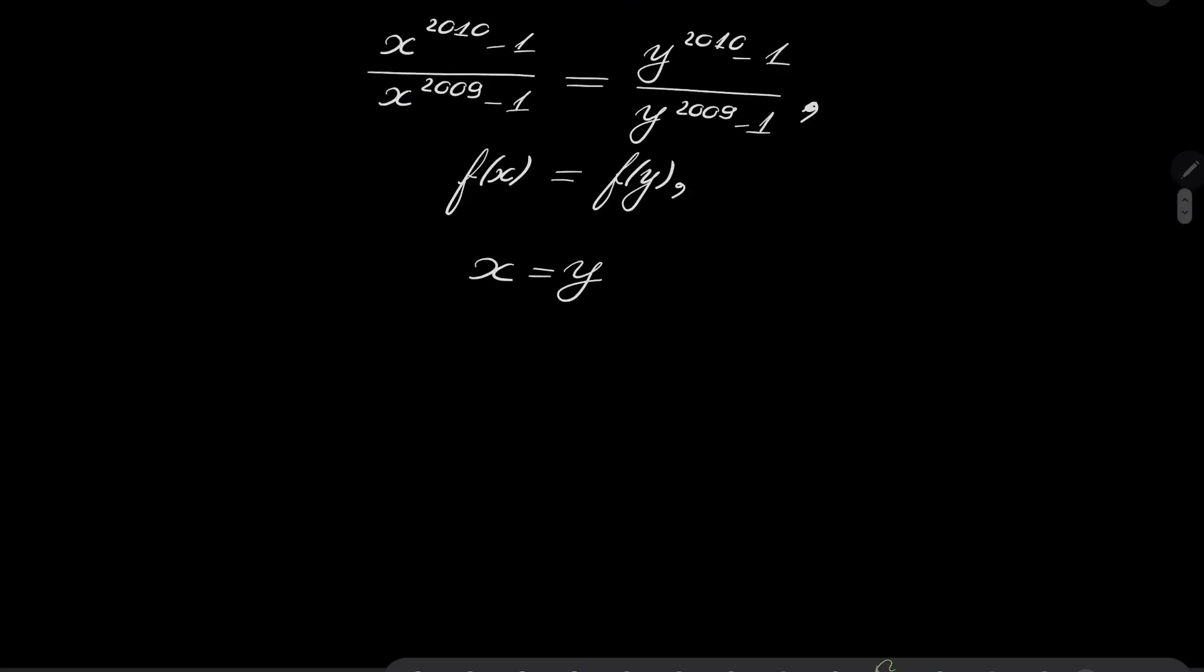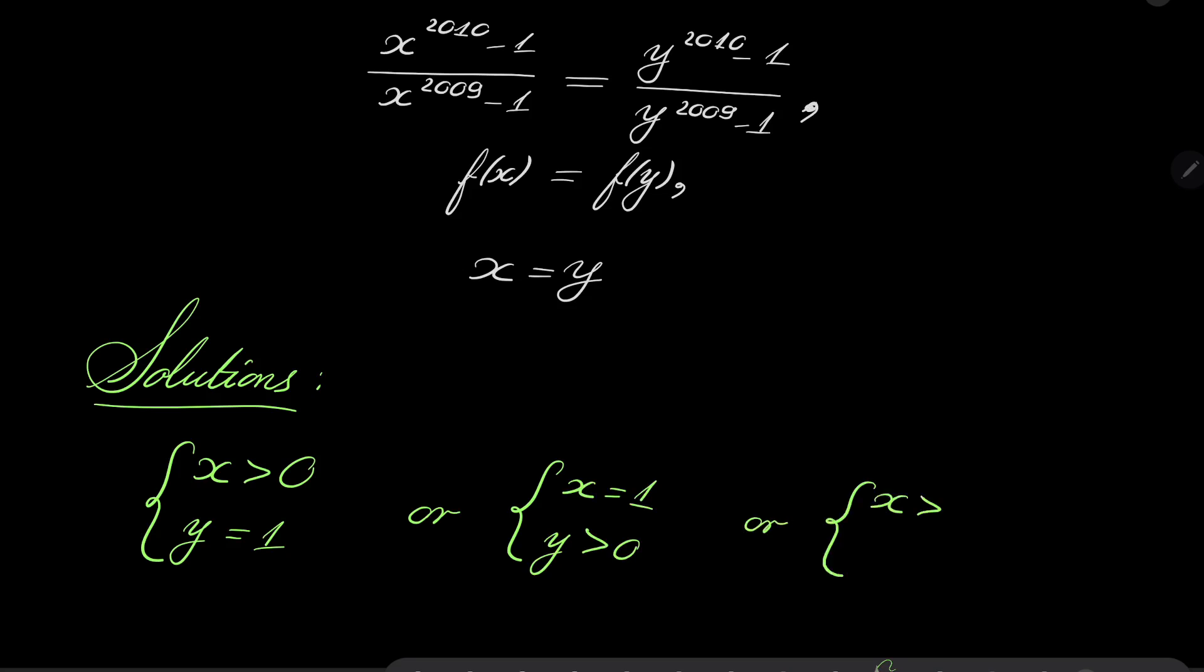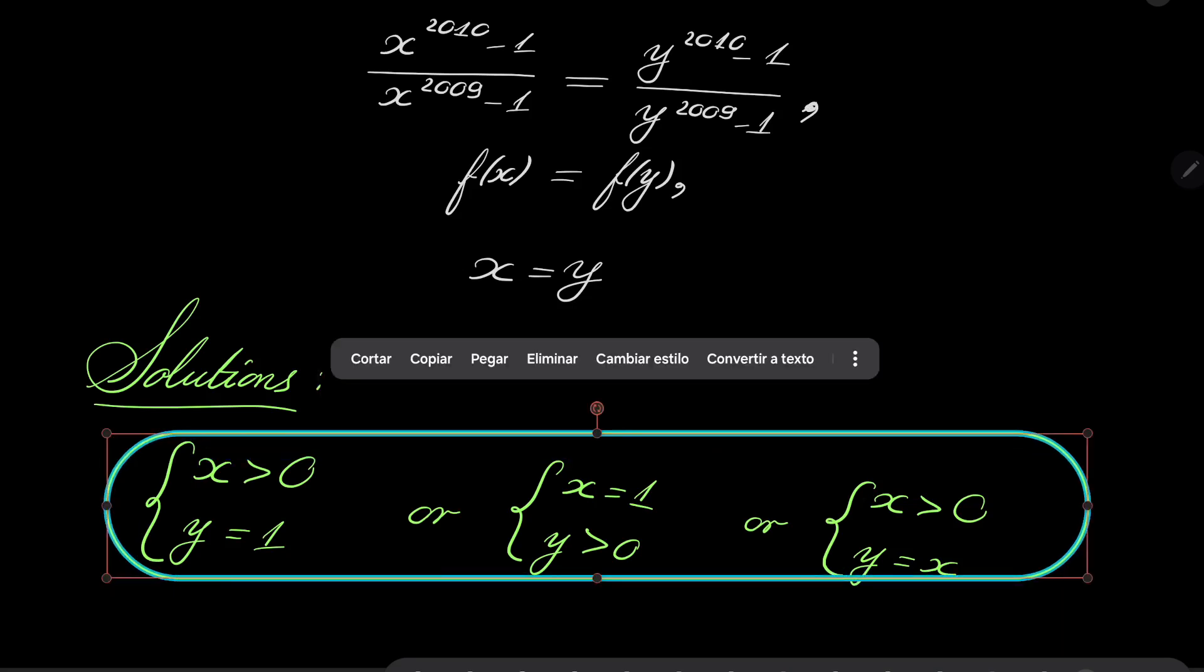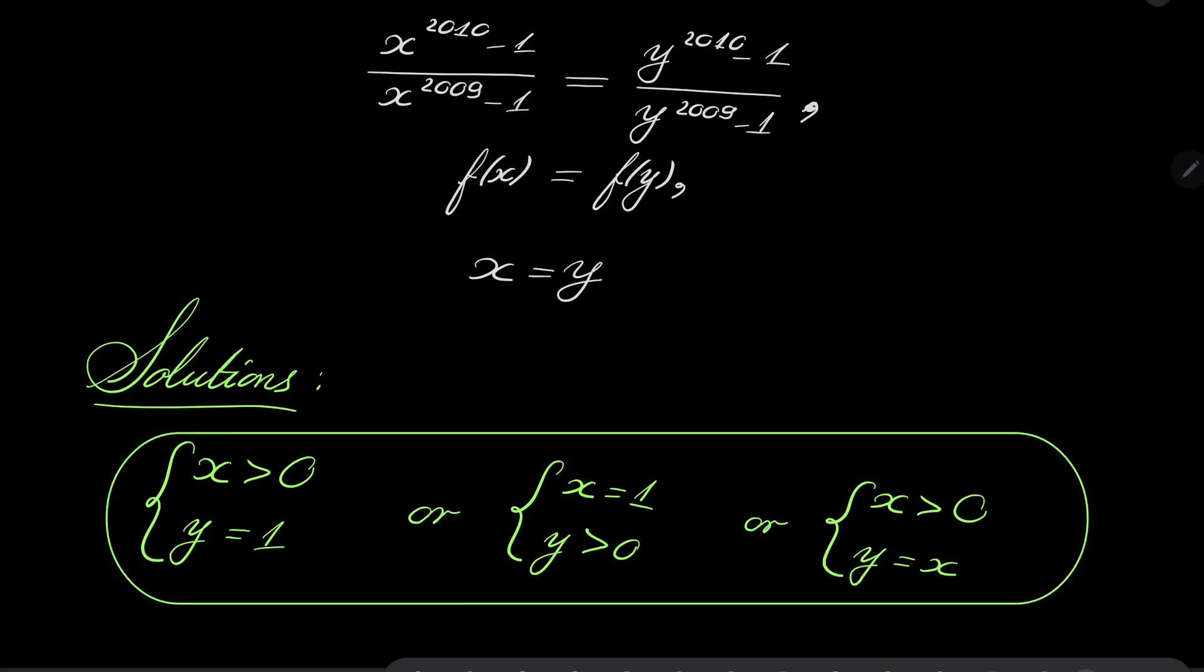We have found another family of solutions. So we can now put everything together. We have three families of solutions: either x is positive and y is 1, or x is 1 and y is positive, or x equals y with both positive. And this closes our problem.